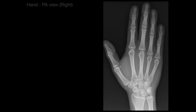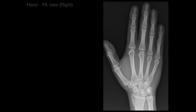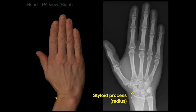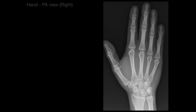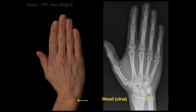First, there is the radius — there it is on the surface anatomy — and the radius has a bony projection called the styloid process of the radius, right there on the wrist. Then on the opposite side is the ulna, which has a styloid process of the ulna, and just proximal to that is the head of the ulna — that big bump on the back of the wrist.